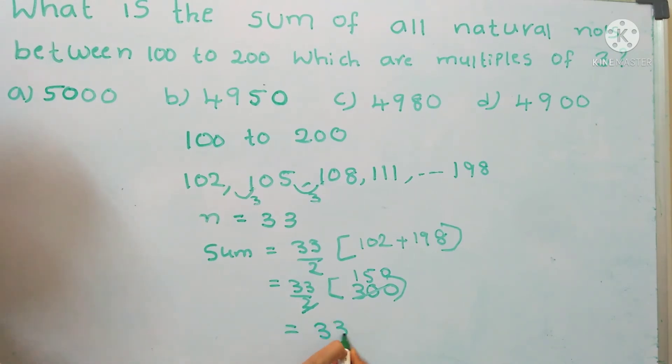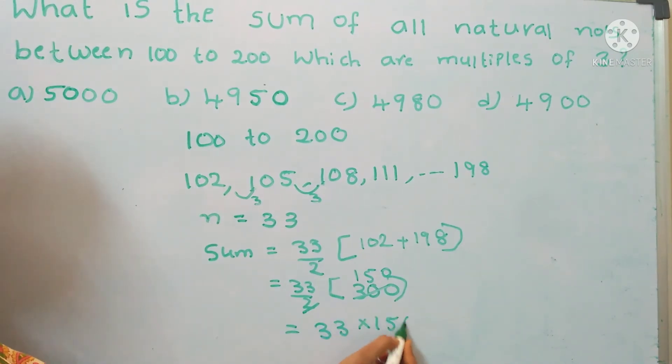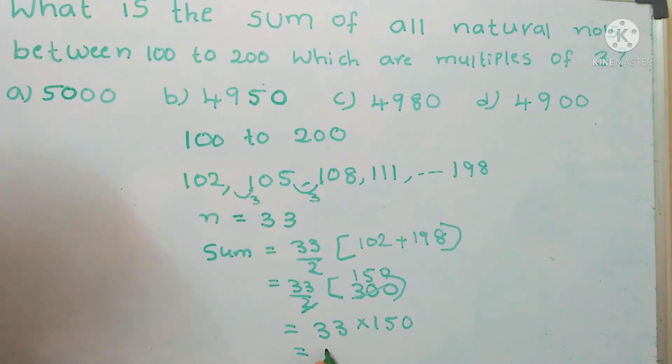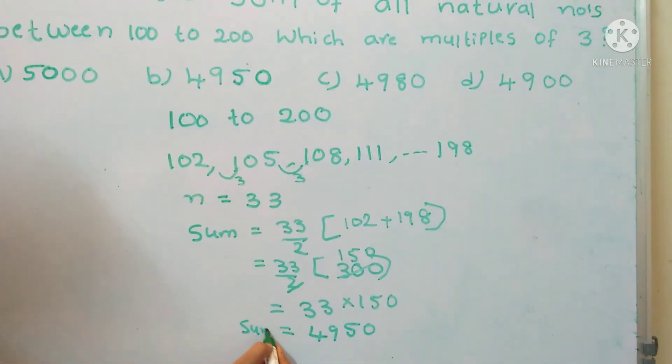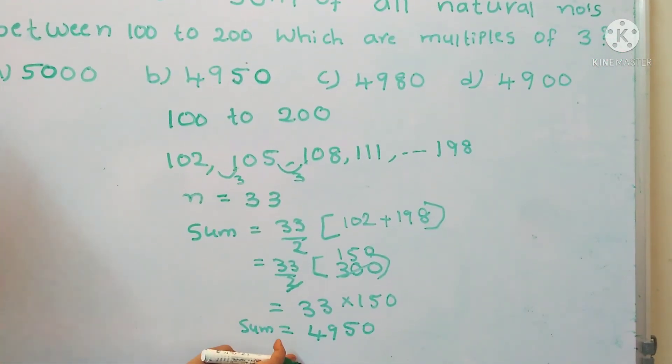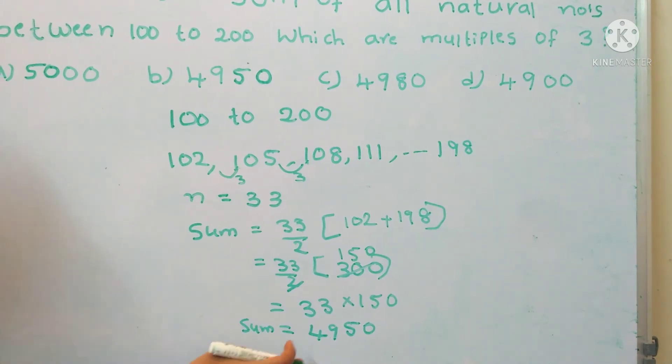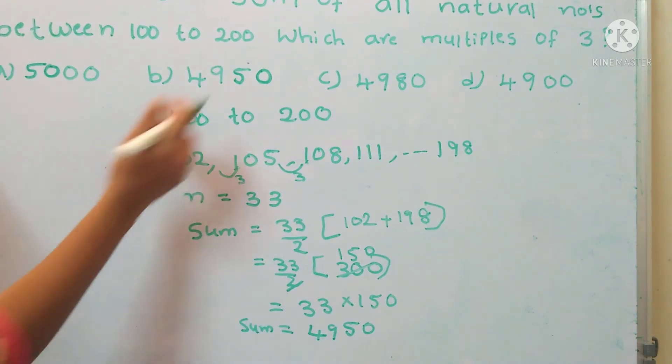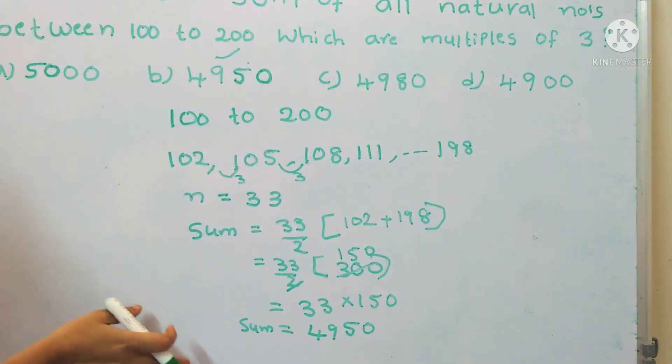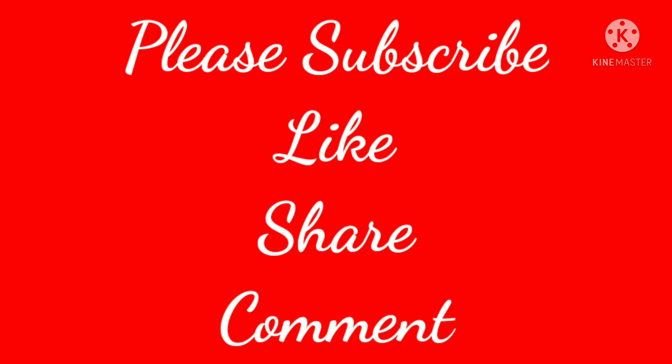So the sum of the numbers between 100 to 200 is 4950. The correct option is B, 4950. Thank you for watching. If you want more videos, please subscribe, like, share, and comment.